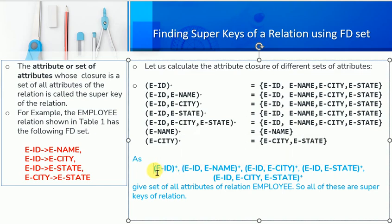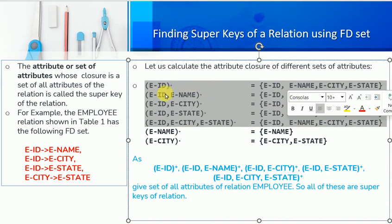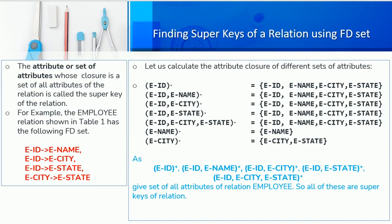This means that the super keys of this relation are: employee ID alone, employee ID and employee name, employee ID and employee city, employee ID and employee state, and employee ID with employee city and employee state. These five combinations are the super keys of the table.